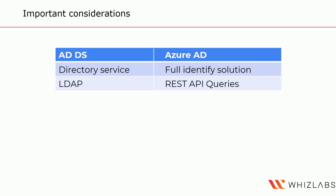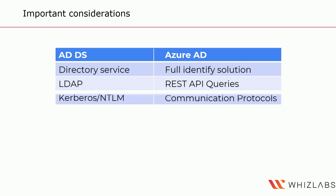ADDS allows you to do LDAP queries to pass data between clients, servers, and domain controllers, while Azure Active Directory allows REST API queries through Microsoft Graph. This allows you to view email, create users and groups, and browse many different properties. ADDS allows Kerberos and NTLM authentication, but Azure AD allows SAML, WS-Federation, OpenID Connect, and also OAuth for authorization.